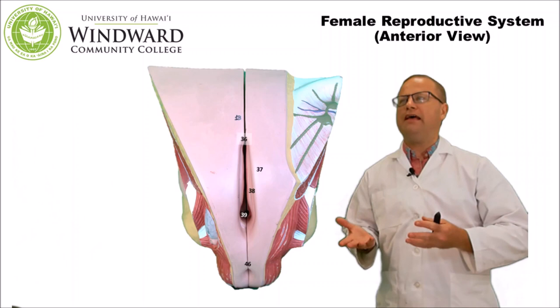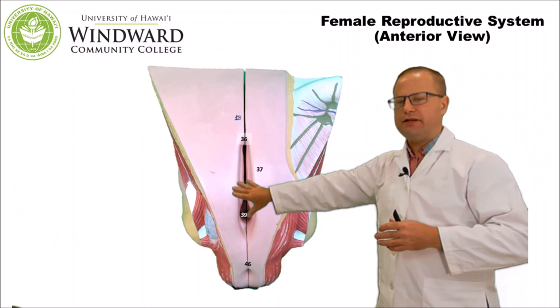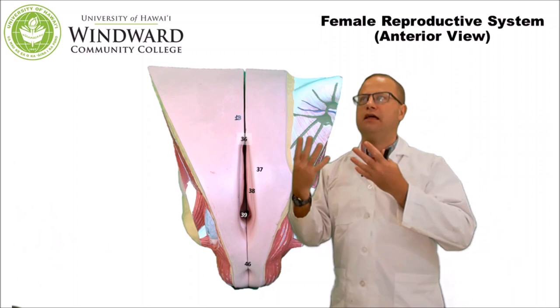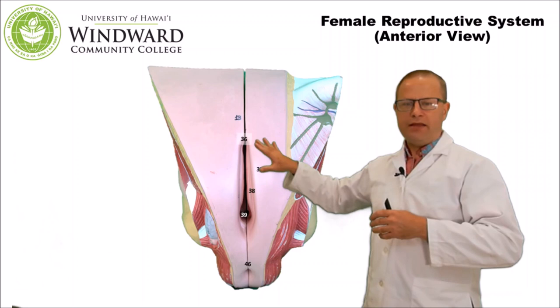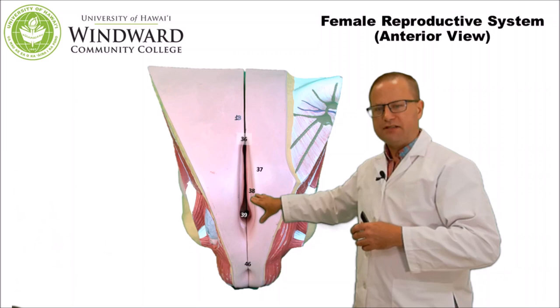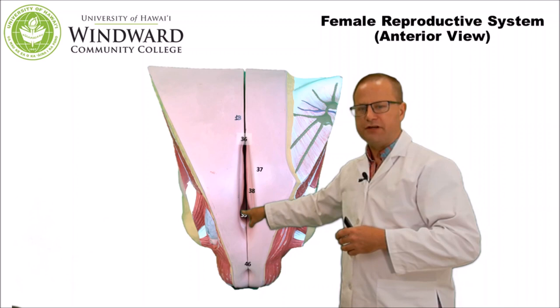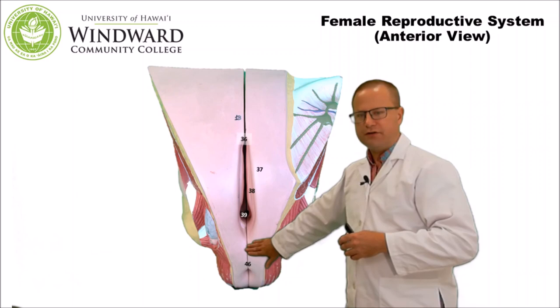Now let's look at a frontal or anterior view of the female external anatomy, collectively called the vulva. Up top is a little slit beneath which we see the clitoris — lots of nerve endings, some erectile tissue, important for the female sexual response cycle. The mons pubis is the area above, and we have the labia majora and labia minora. Somewhere midway would be the external urethral orifice, and lower down is the vaginal canal where the penis would be inserted during intromission. The perineum is the area between the genitals and anus; the anus is located below.